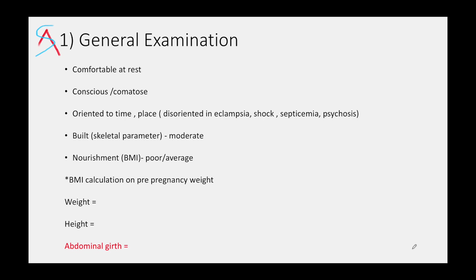In general examination, you start by saying patient is comfortable at rest. Patient is conscious — patient could be comatose also, but these cases won't be given in your exam. The cause of comatose could be hypoglycemia, post-seizure, or anything else. Patient is oriented to time and place. Your examiner may ask what could be the cause of disorientation — disorientation could be present in eclampsia, shock, septicemia, or psychosis.